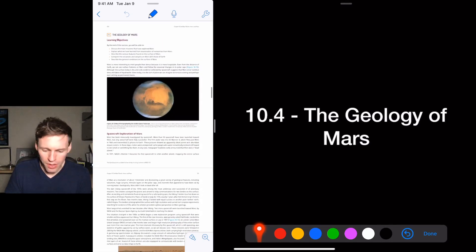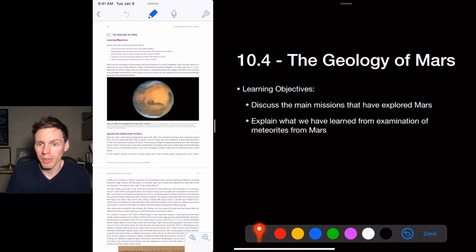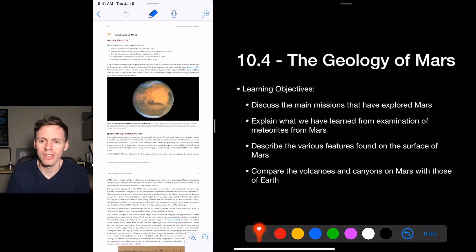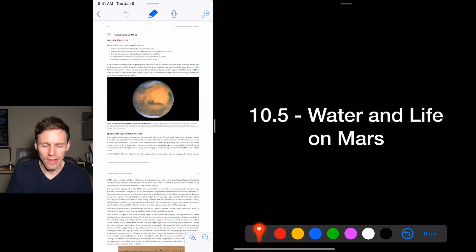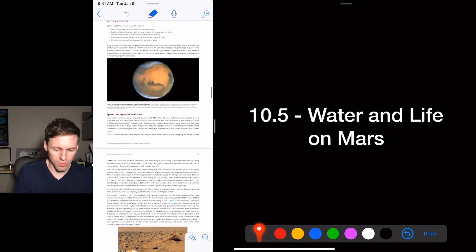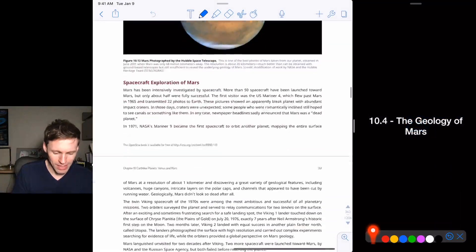Okay. So the geology of Mars here, we want to talk about the main missions that have explored Mars, explain what we have learned by looking at meteorites from Mars, describe the various features found on the surface of Mars and compare the volcanoes and canyons on Mars with those on earth. We want to describe the general conditions on the surface of Mars. So the main, oops. So the main, let me go here, main things here.